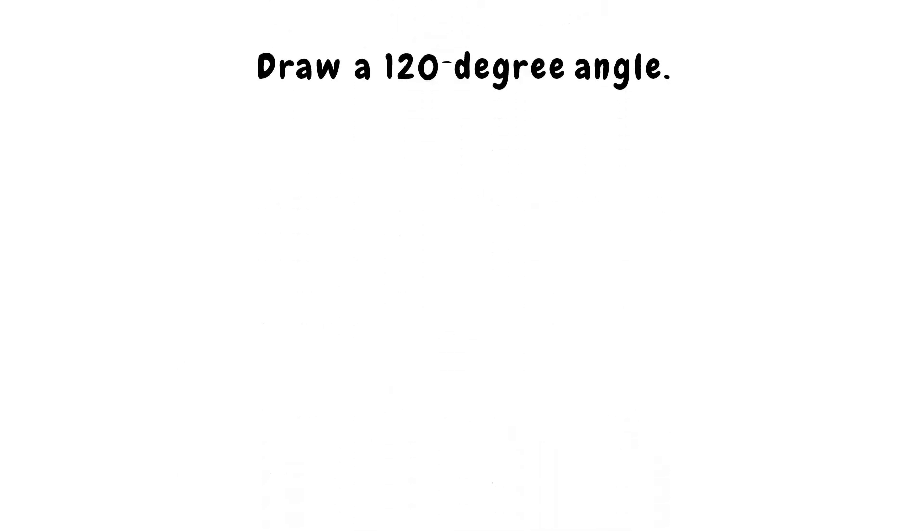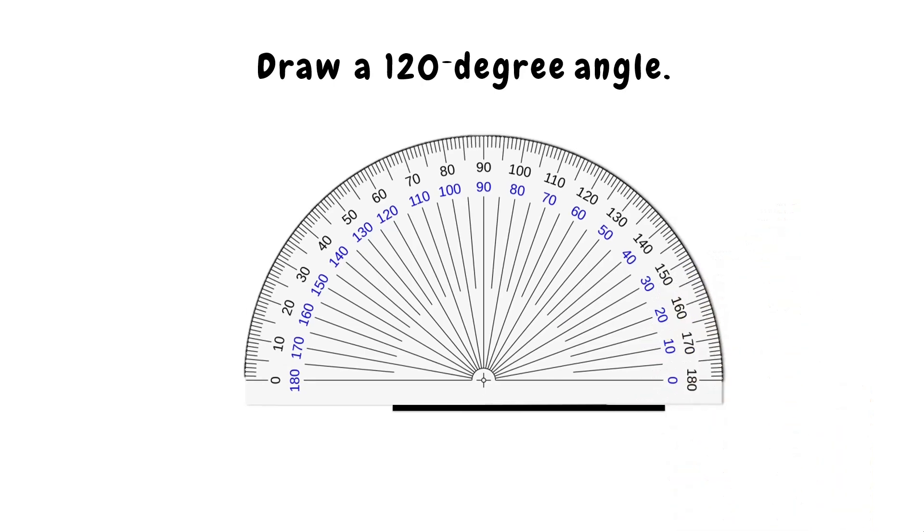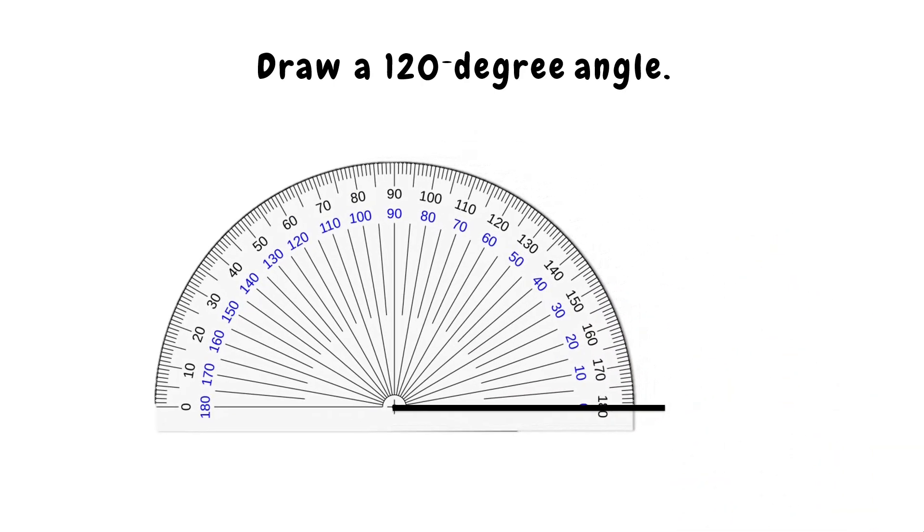On to our last one, let's draw a 120 degree angle. Same steps. Start with the baseline. Center the protractor to the end point, making sure that one end pointed at the 0 degrees.